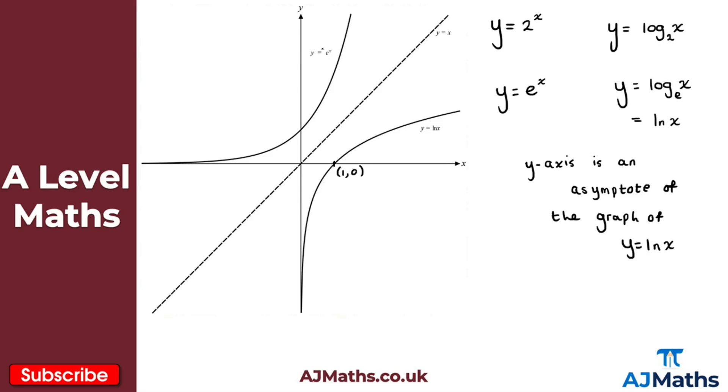Similar to, in the case here of y equals e to the x, the x-axis is an asymptote to that curve. Obviously, once we reflect that, then the y-axis becomes an asymptote to y equals the natural logarithm of x.